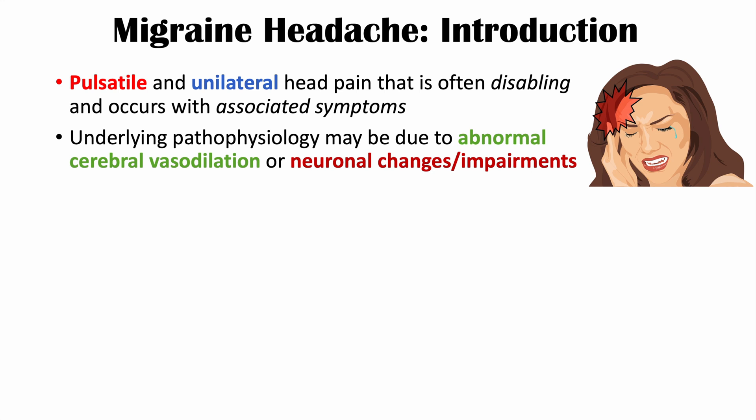Abnormal cerebral vasodilation means that the vasculature in your head abnormally dilates, and there may also be some changes in neuronal firing or functioning. This is a brief overview of some elements of migraine headaches. If you want more information on migraine headaches, please check my lesson on that topic.